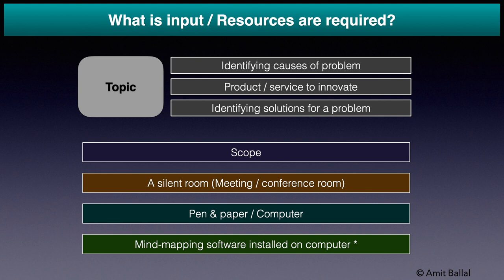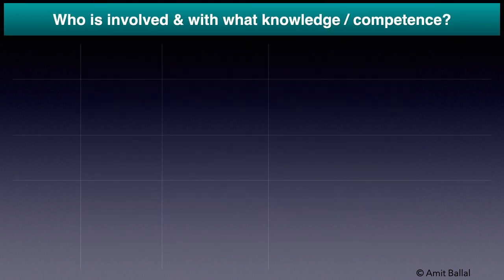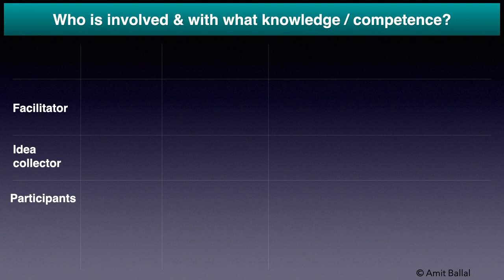I use a free mind mapping software called FreeMind — a link is in the description box. In case a computer or mind mapping software is not available, I still recommend the use of mind mapping on paper. You can also use other traditional methods of note-taking to record ideas. There are three categories of roles in a brainstorming session: facilitator, idea collector, and participants.